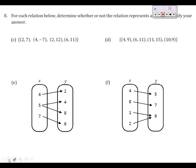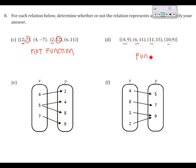For parts C and D, we have ordered pairs instead of graphs. We check whether any x value is repeated with a different y value. In part C, the value two appears twice with different y values — that's a problem. When we put an input in we should get one and only one output, so this is NOT a function. In part D, all x values — four, six, eleven, ten — are different, so it automatically IS a function.